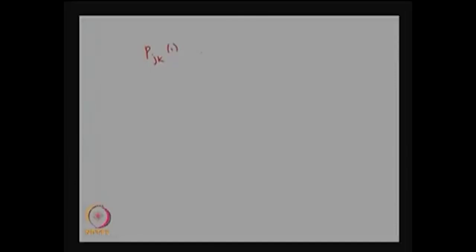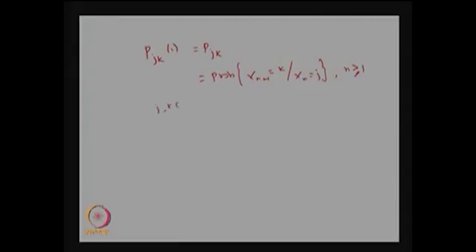Using this, we can define the one-step transition probability, denoted p_jk(1) or simply p_jk — that is the probability that Xn+1 equals k given that Xn equals j, for all n greater than or equal to 1, with j, k belonging to S. If you compute the 0-step transition probability, it equals 1 when j equals k, and 0 otherwise.